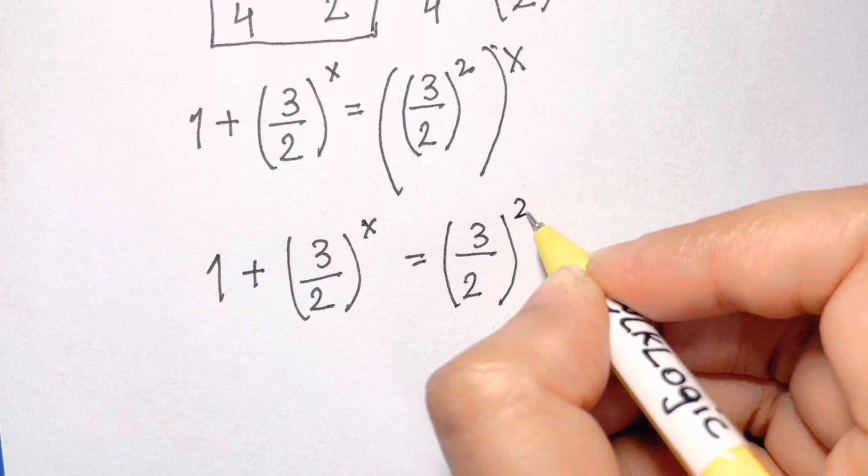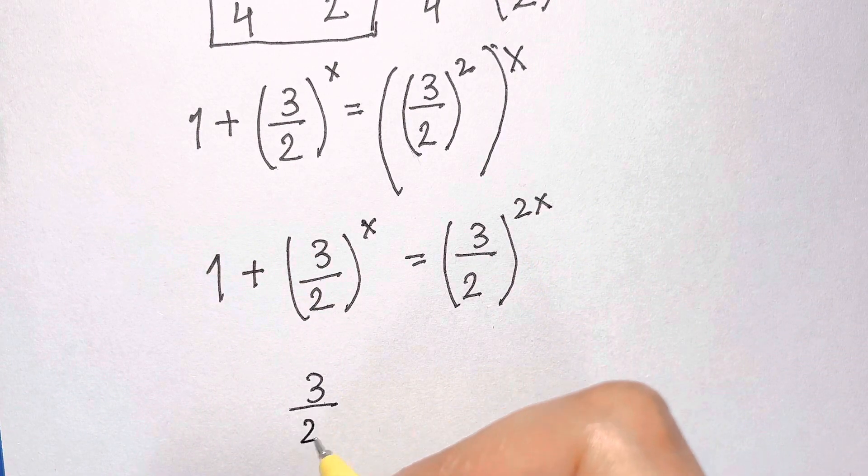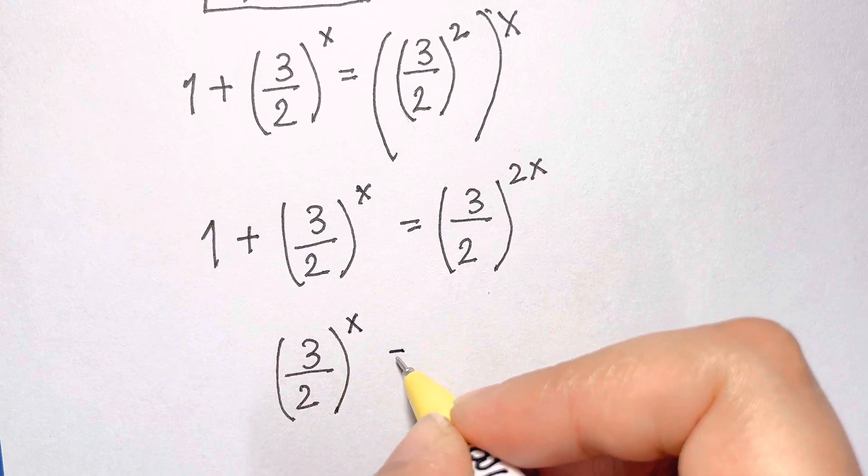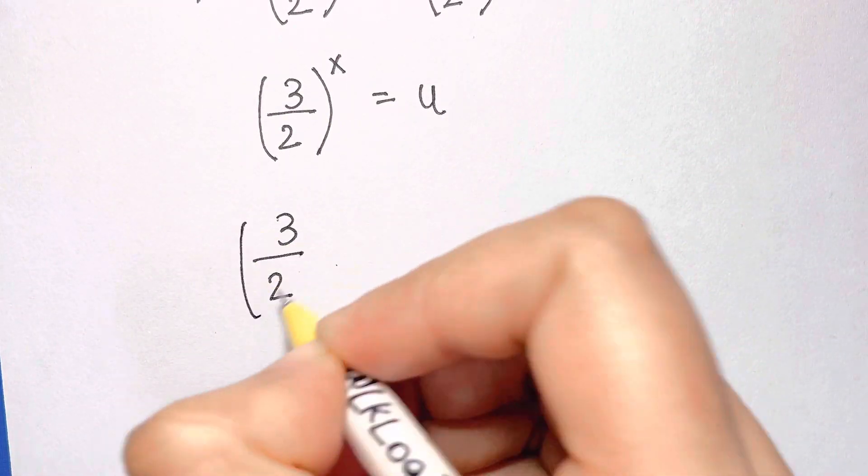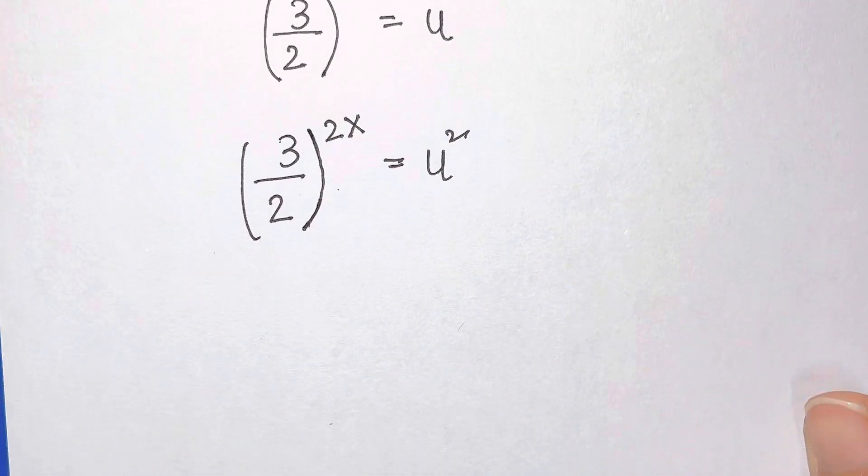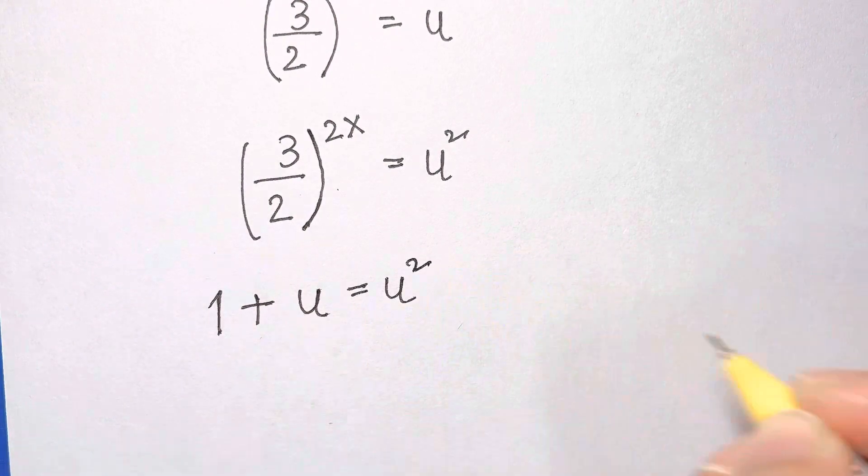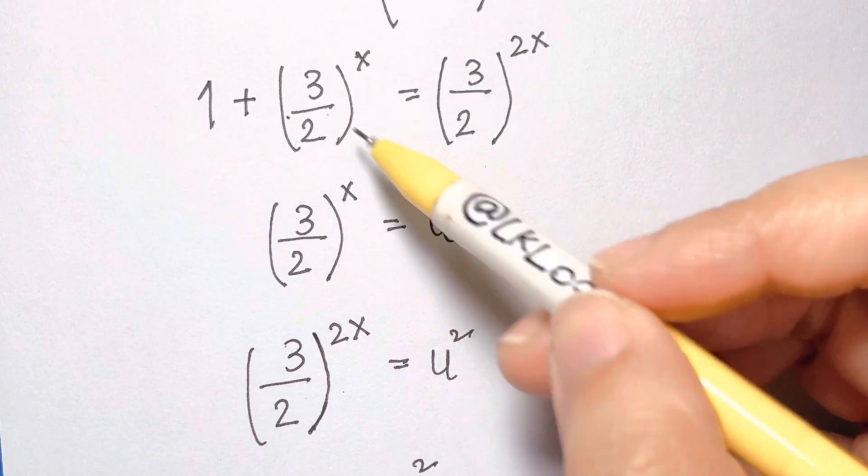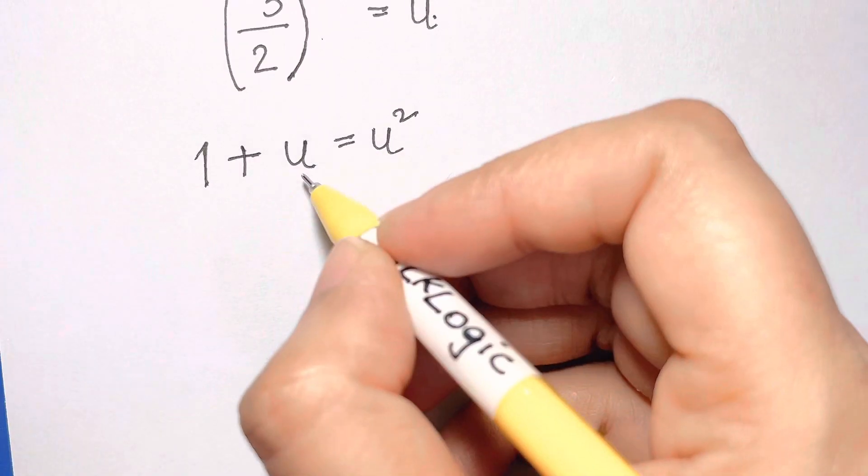Now make the substitution: 3 over 2 to the power of x equals u. We thus have a quadratic equation: 1 plus u equals u squared. We'll move the terms to the right hand side so we get 0 equals u squared minus u minus 1.